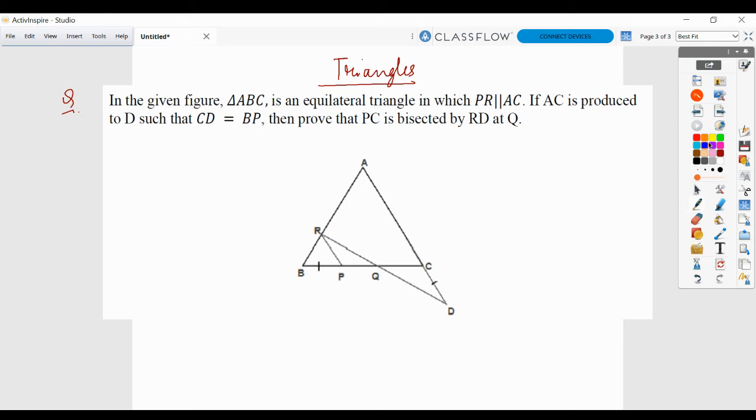Hello everyone. Today we have another question on triangles which is a proving question. In the given figure, triangle ABC is an equilateral triangle in which PR is parallel to AC.